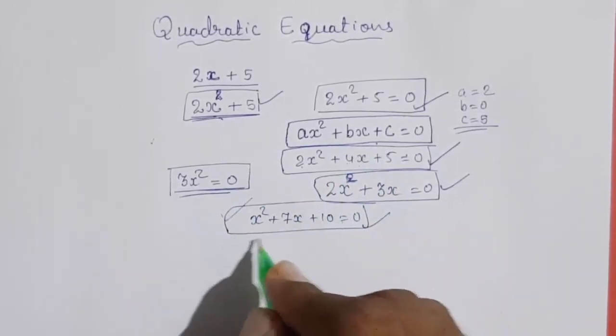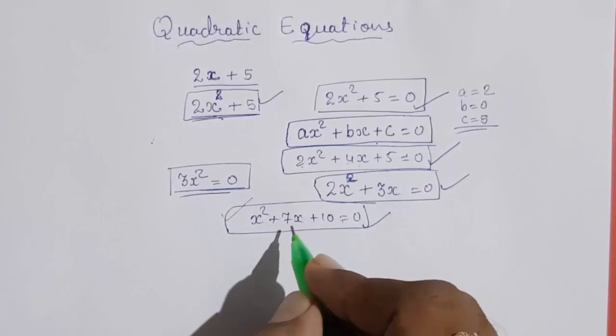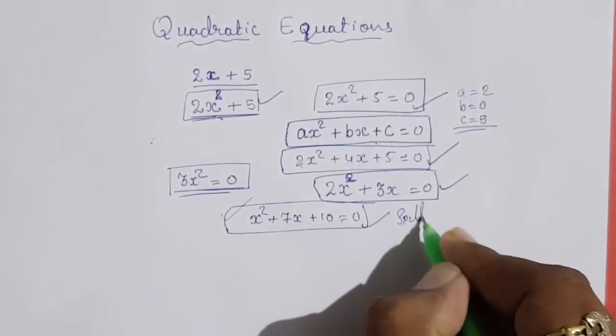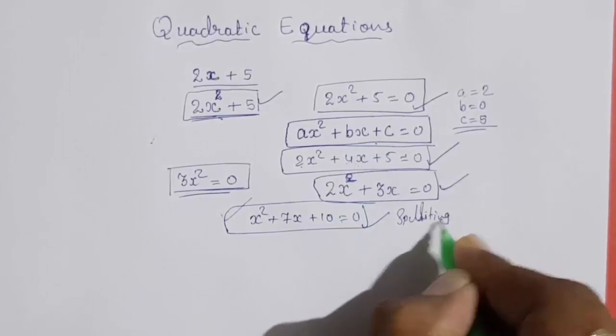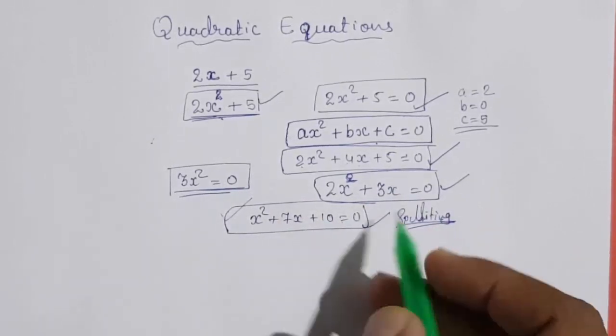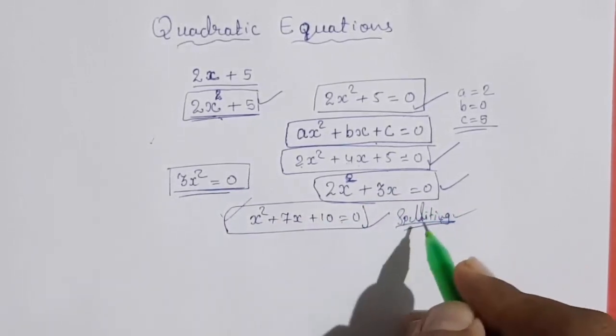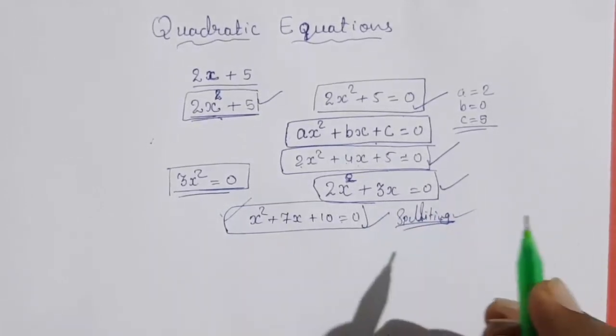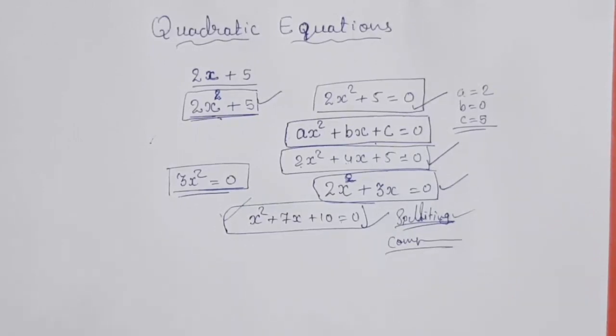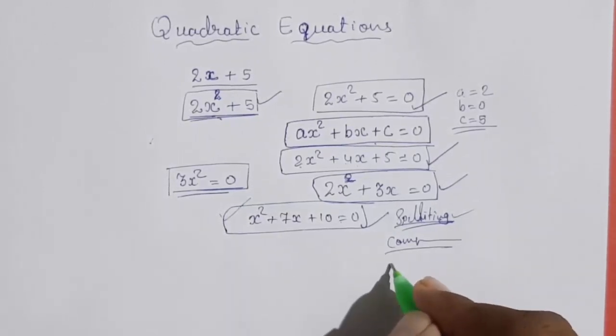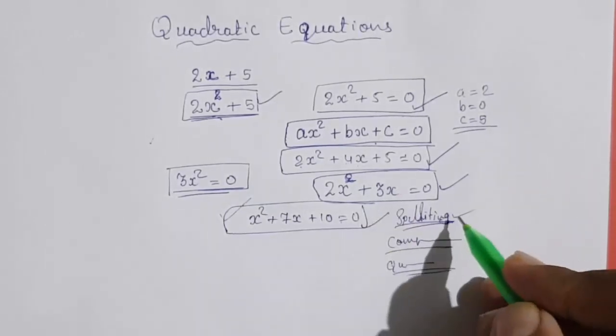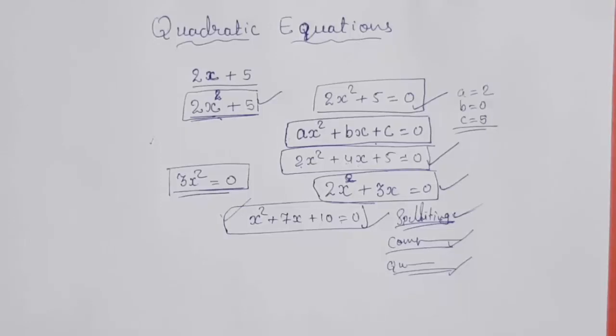There are total three methods for solving this and finding the factors or zeros. First method is splitting the middle term. I had made separate videos for that. All three methods. But you know I think from lower standard you are doing this, splitting the middle term. Second method is completing the square method. And third method is quadratic formula. One formula is there. I had made separate videos for all three. If you want to see you can see those also.